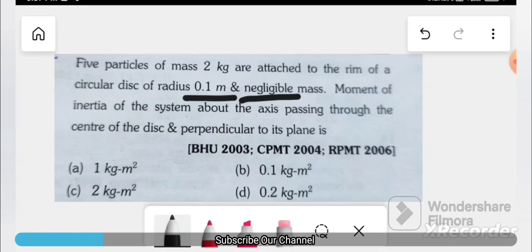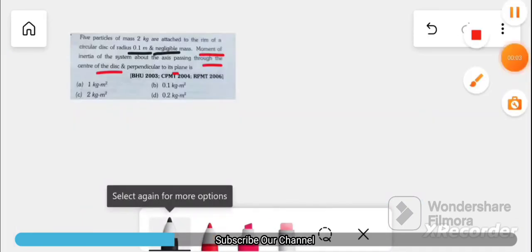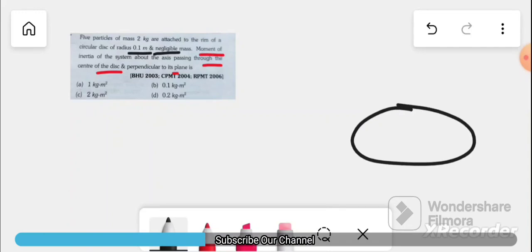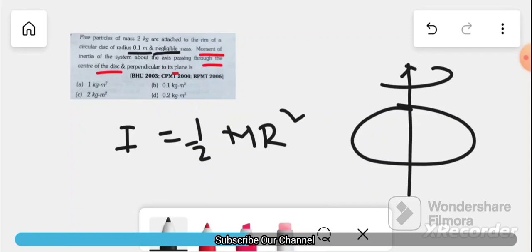The circular disc has negligible mass - this is important. The moment of inertia of the system about the axis passing through the center of the disc and perpendicular to its plane.